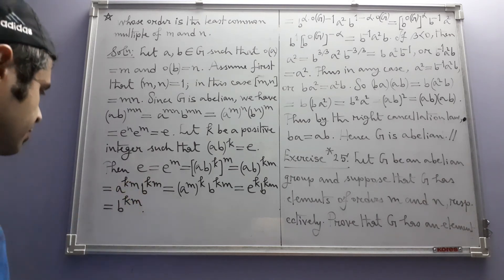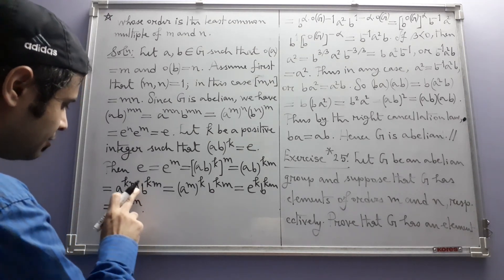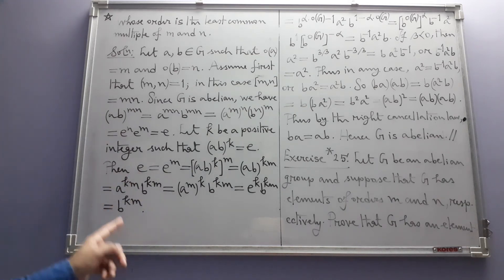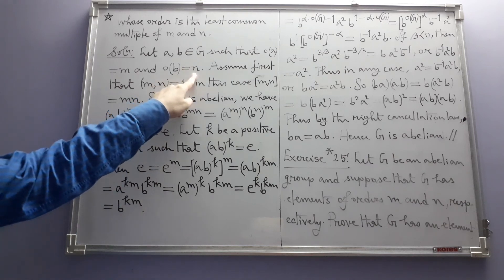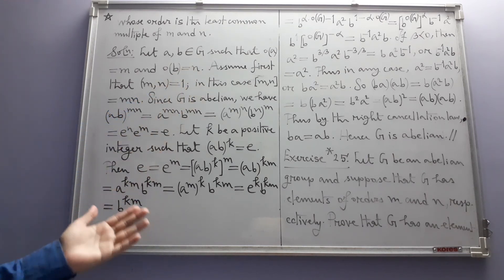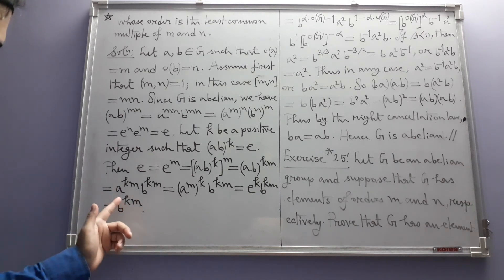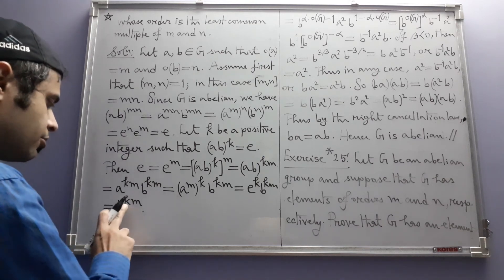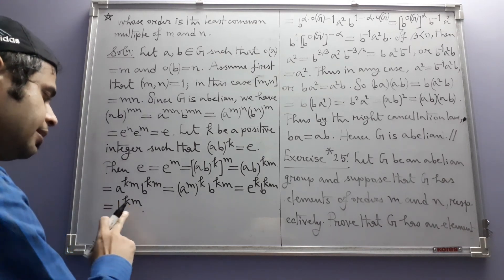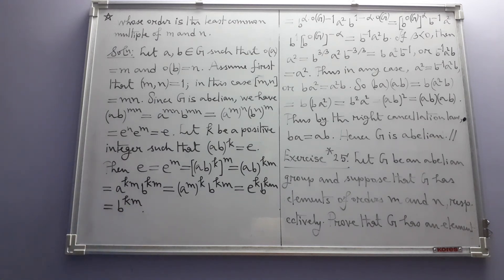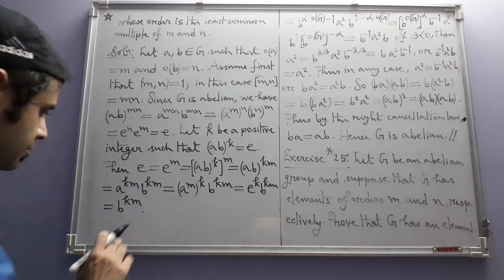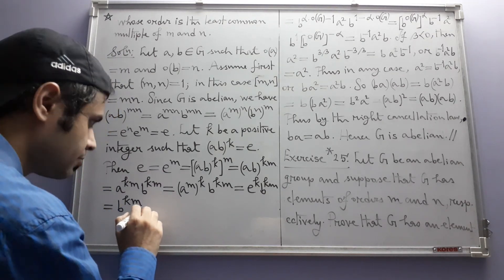So the order of B, which is N, satisfies N ≤ Km. But more is true: N not only is less than or equal to Km, but N in fact divides Km. This is a result we will see in Exercise 36. The conclusion follows from there that mn divides K, completing the proof.